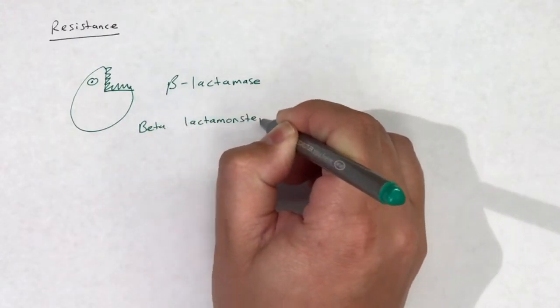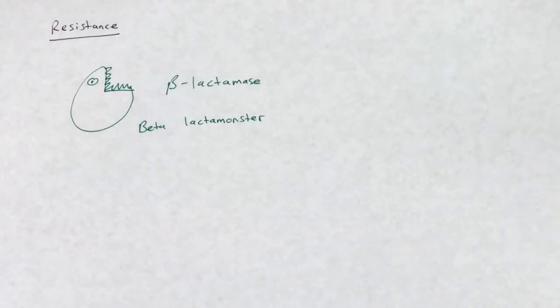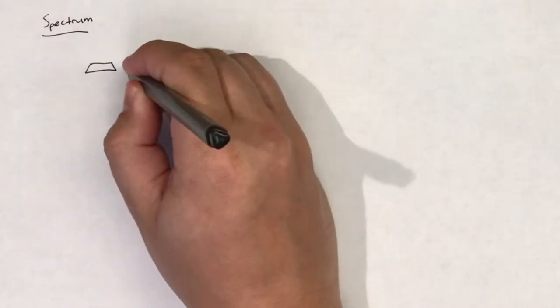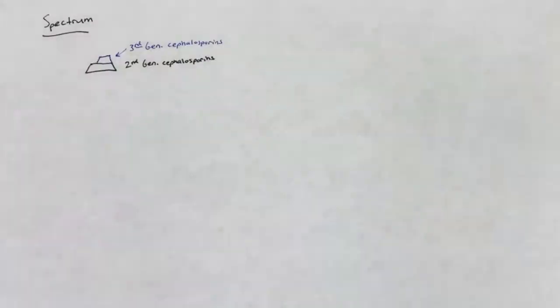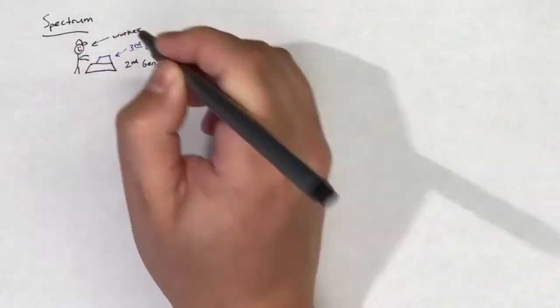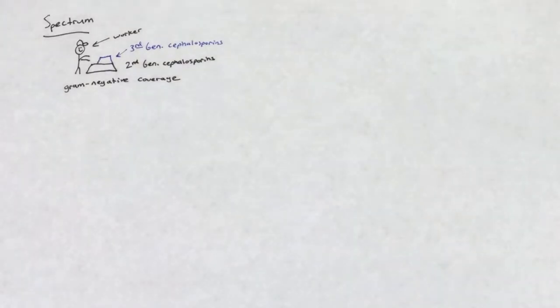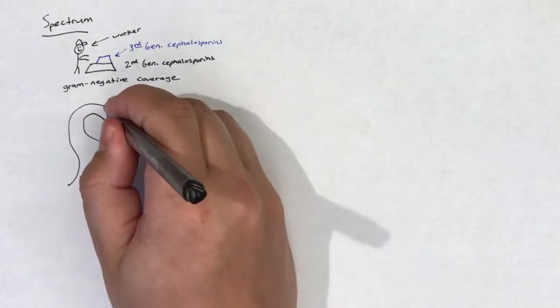Refer to the video that covers cephalosporins as a whole for more details. Third-generation cephalosporins build upon the progress made by second-generation cephalosporins, extending the spectrum of coverage to incorporate even more gram-negative bacteria.